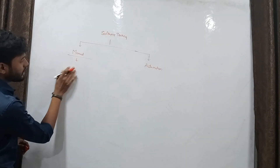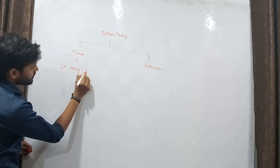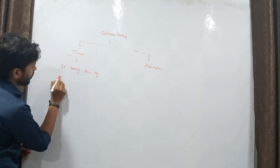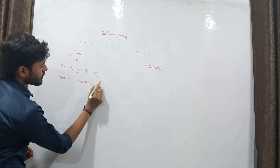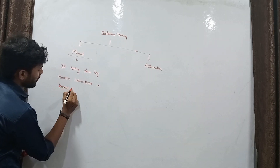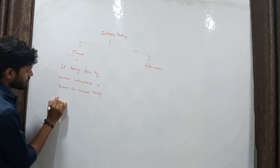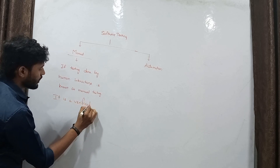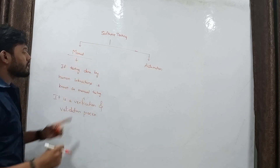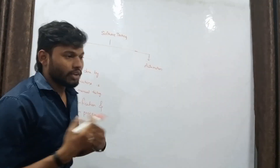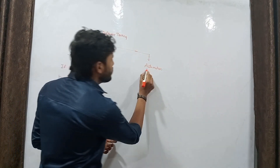Coming to the definition — manual testing is nothing but the process where testing is done by human interactions. It is a verification and validation process. Manual testing means we are the ones involved; we give the values and check whether the application is working properly or not. That is known as manual testing.